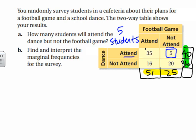This adds up to 76 both horizontally and vertically. Interpreting these: 51 students attended the football game, 25 students did not attend the football game, 40 students went to the dance, and 36 students did not go to the dance. A follow-up question might ask what percent of students attended the dance — you'd calculate 40 out of 76 and convert that to a percent.